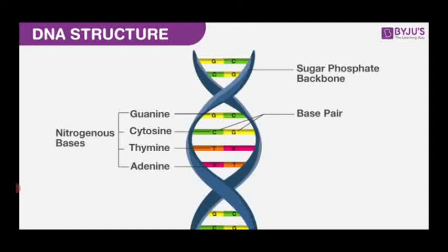DNA metabolism in plants takes place in three steps: DNA replication, DNA repair, and recombinant DNA. First we are going to see DNA replication, then DNA repair, then recombinant DNA.